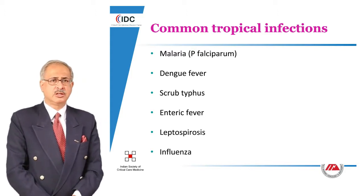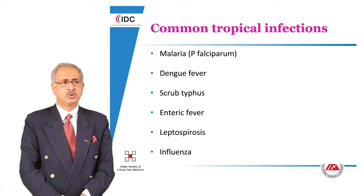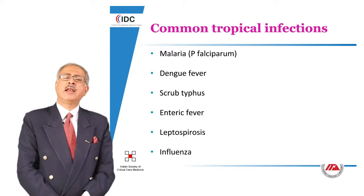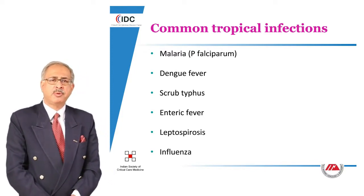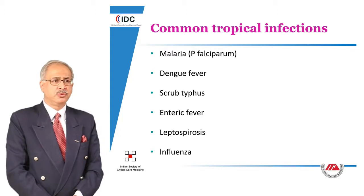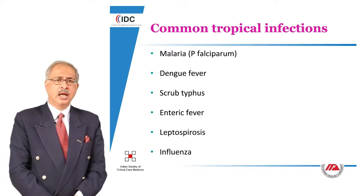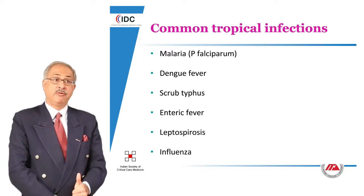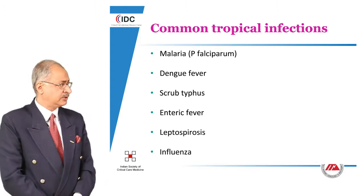Dengue is coming in cycles, sometimes hitting the urban areas of the north, sometimes the west, south, or east. Scrub typhus is another disease we are seeing — there has been a resurgence over the last several years, and it is now a well-known entity being identified more commonly with the availability of resources to diagnose scrub typhus.